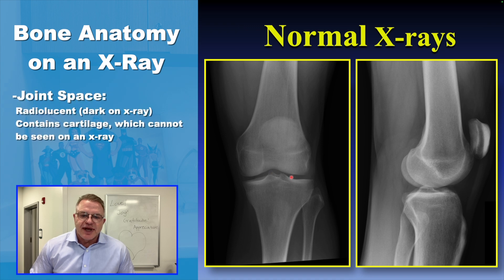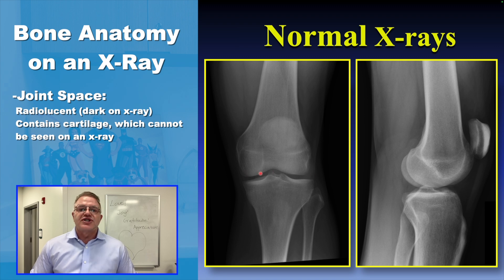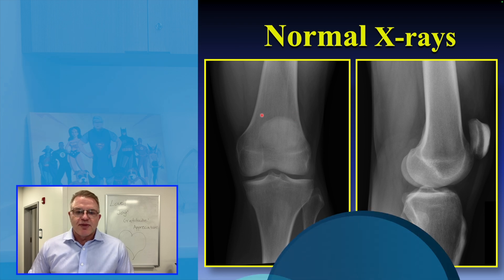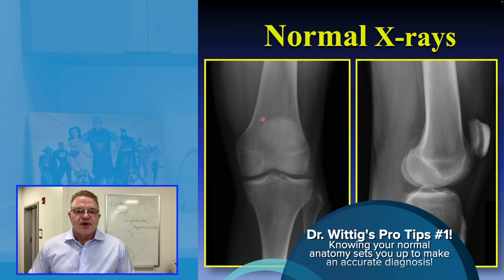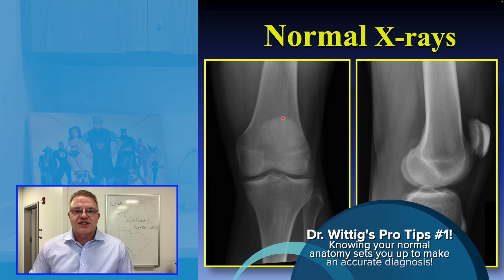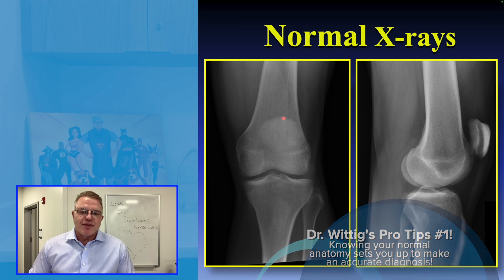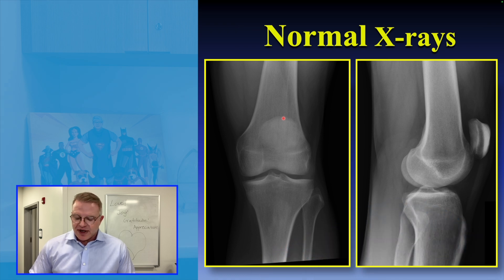This is the joint space. It's radiolucent, or dark, because there's cartilage there, and cartilage does not show up on the x-ray — just the bone does. This is all important to know because when we assess bone tumors, they can have different radiological appearances depending on the amount of bone they destroyed and how fast they are growing.